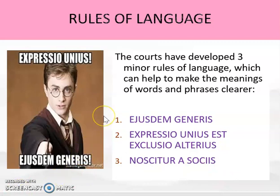The first one is Ejusdem Generis. The second one is very Harry Potterish: Expressio Unius Est Exclusio Alterius. And finally, Noscitur a Sociis. But don't panic in the exam — you don't have to say any of these phrases, you just have to be able to write them down and explain them. So we're going to look at each one in turn.